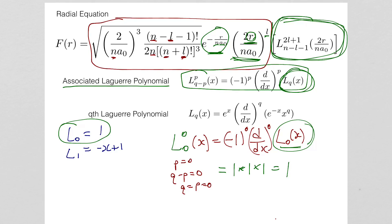Once I tell you the principal quantum number n and the angular momentum quantum number l, you know enough to plug them into all the relevant places, evaluate the Laguerre polynomial, and work out the full radial equation. We'll do that in future classes. As you can tell, a lot of terms simplify and go away once we start specifying values for n and l, so look forward to that.